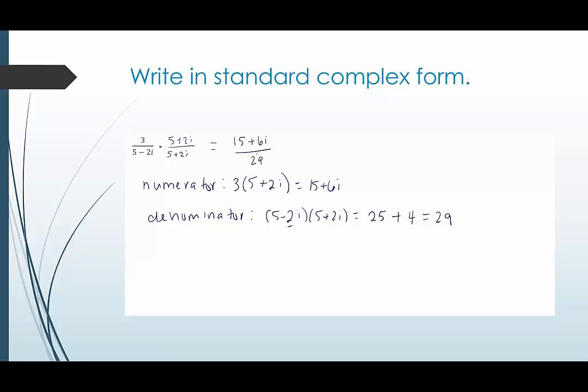If you want to you can separate it right because it should be a plus bi form. That's what standard complex form means. So you can just separate them. 15 over 29 plus 6 over 29 times i. That's getting a little bit carried away.